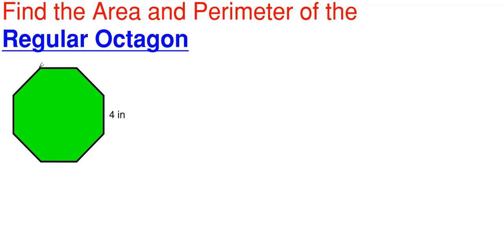Looking at our regular octagon right here, we have four inches for one of our sides. Since it is regular, that means that all my sides are exactly the same length — they're all exactly four inches all the way around.